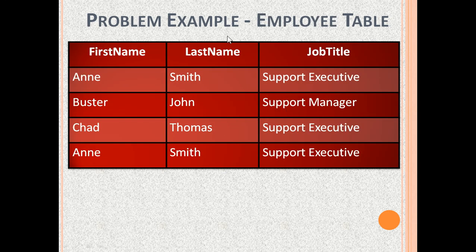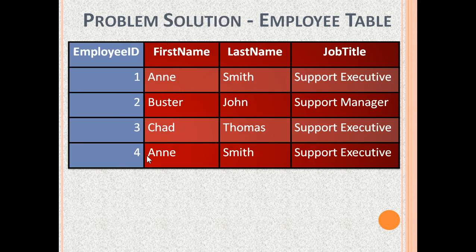Another problem example: this is the employee table. Its columns are first name, last name, and job title. The problem is duplicate rows, like row 1 and row 4. This gives rise to issues — which row should we update if only one Annie Smith is promoted? Or which row should we delete if one Annie Smith leaves the organization? The solution is to have a primary key in the table. The primary key employee ID makes every row in the table unique.